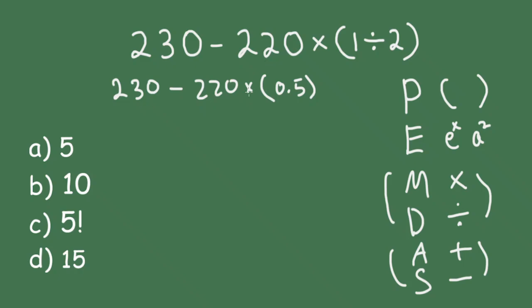And the multiplication over here is 220 times 0.5. Well, it's 1 half of 220, that's going to be 110. So this becomes 230 minus 110.